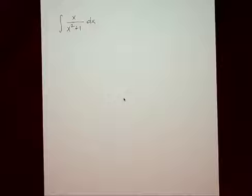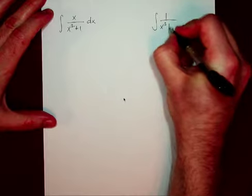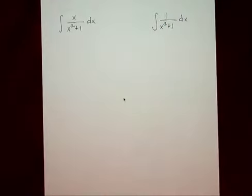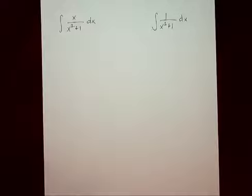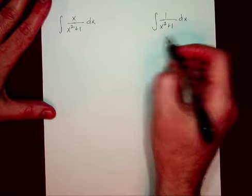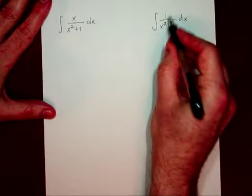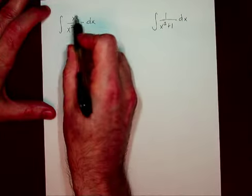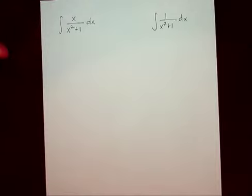Now, the second question I need to ask myself is: is the numerator the derivative of the denominator, or is it capable of being the derivative of the denominator? And the answer is yes. You might look at that x squared plus 1 in the denominator and think of arctangent — and you would be right, that is the appropriate denominator to think of arctangent. But in this particular case, if this is arctan, there needs to be a 1 up in the numerator. If I identify it as arctan, then I have this x floating around, and there's nowhere for the x to go.